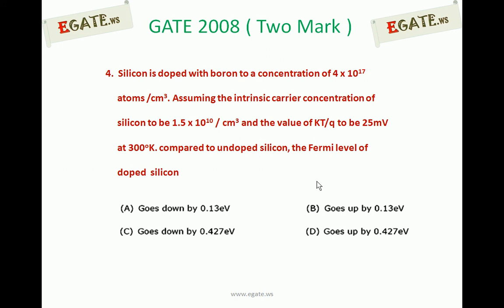Silicon is doped with boron to a concentration of 4 × 10^17 atoms per centimeter cube. Assuming the intrinsic carrier concentration of silicon is 1.5 × 10^10 per centimeter cube and the value of kT/q to be 25 millivolts at room temperature. Then, compared to undoped silicon, the Fermi level of doped silicon: A) goes down by 0.13 eV, B) goes up by 0.13 eV, C) goes down by 0.427 eV, D) goes up by 0.427 eV.